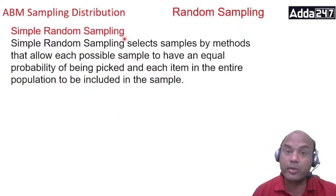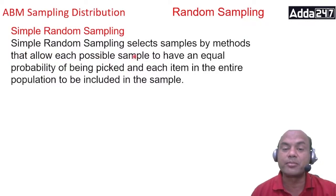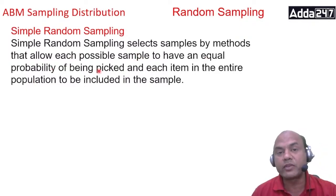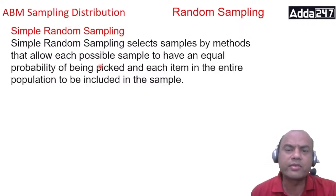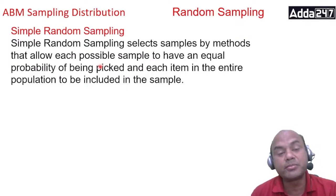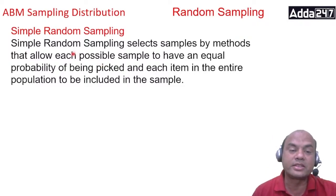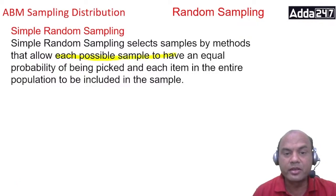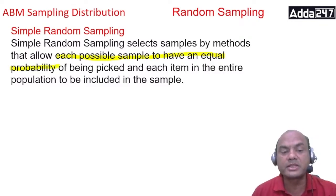Simple random sampling selects samples by methods that allow each possible sample to have an equal probability of being picked, and each item in the entire population to be included. Any 10 students from a class of 100 — everyone has got a chance. Each possible sample has an equal probability of being picked, and each item in the entire population can be included in the sample.